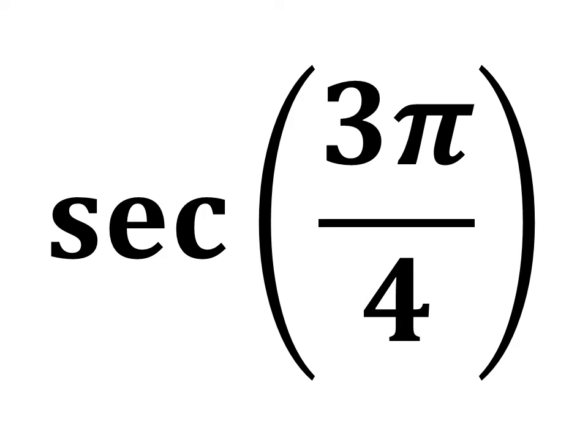In this video, we will learn to find the value of secant of 3 times pi upon 4. Two methods have been explained to find this value.